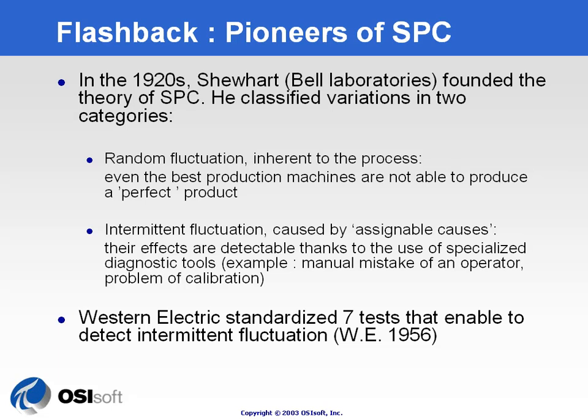He came up with the idea that variation would be caused by two different sources. He wanted to differentiate between random fluctuations — those fluctuations that you have to live with, the variation inherent to the process — and intermittent fluctuations that could be due to external forces applied to the process and that could be linked to assignable causes. He wanted to build the tools that would help the user differentiate between those two kinds of variations occurring in the process.